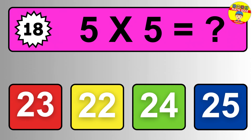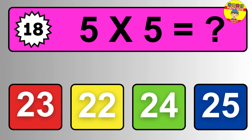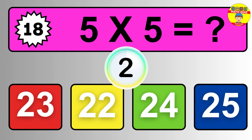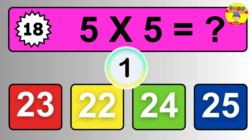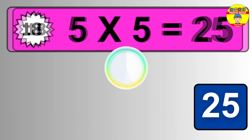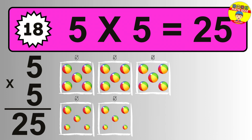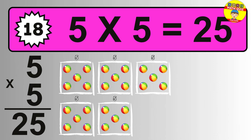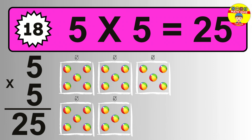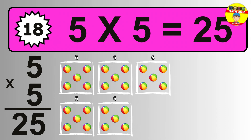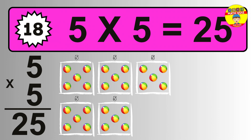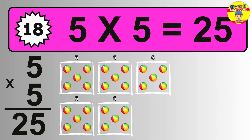Question eighteen. Five times five equals what? The answer is five times five is 25. To calculate, we have five groups with five balls each one. So how many balls do we have? 25 balls.